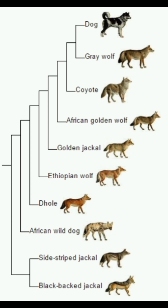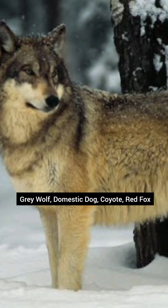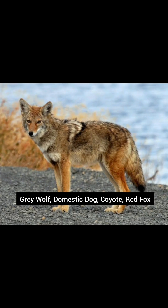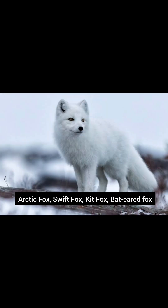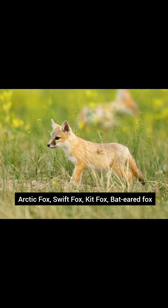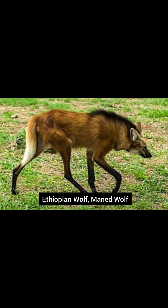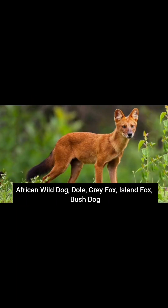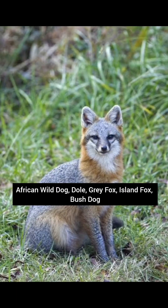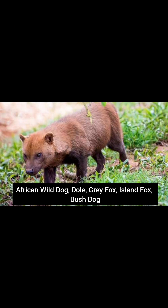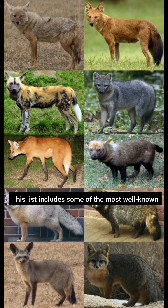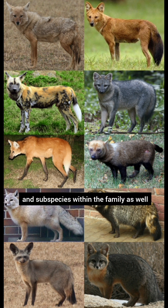Members. Here is a list of some of the members of the Canidae family: gray wolf, domestic dog, coyote, red fox, arctic fox, swift fox, kit fox, bat-eared fox, Ethiopian wolf, maned wolf, African wild dog, dhole, gray fox, island fox, and bush dog. This list includes some of the most well-known members of the Canidae family, but there are additional species and subspecies within the family as well.